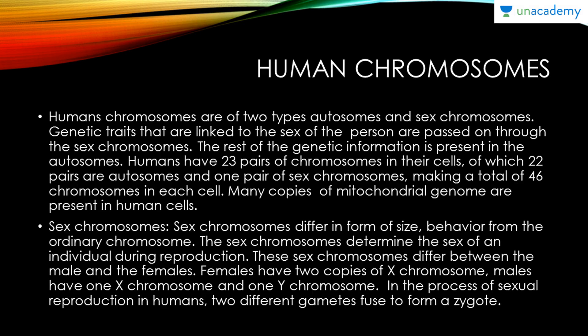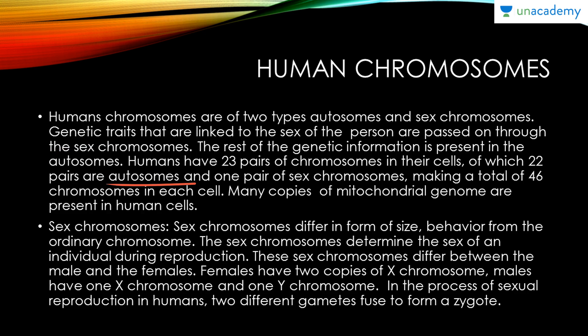Human chromosomes are of two types: autosomes and sex chromosomes, also termed allosomes. Genetic traits linked to the sex of a person are passed on through the sex chromosomes; the rest of the genetic information is present in the autosomes. Humans have 23 pairs of chromosomes — 22 pairs of autosomes and one pair of sex chromosomes — making a total of 46 chromosomes per cell. Many copies of the mitochondrial genome are also present in human cells.